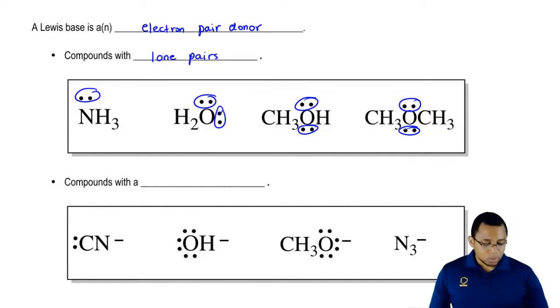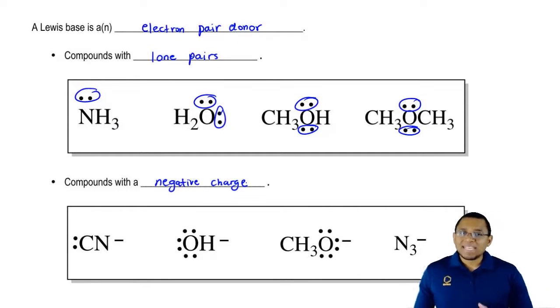Then we're going to say also compounds with, what do all of these have in common? They all have in common a negative charge. If you have a negative charge, that means you have an excess of extra electrons, so excess of extra lone pairs.